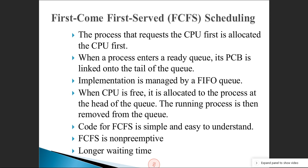When the CPU is free, it is allocated to the process at the head of the queue — the one that arrived first. The running process is removed from the queue, and the next process moves to the head. New arrivals are added at the tail. The code for FCFS is simple and easy to understand. FCFS is non-preemptive: once a process is executing, it is not interrupted even if another process arrives. A known problem is longer waiting time.